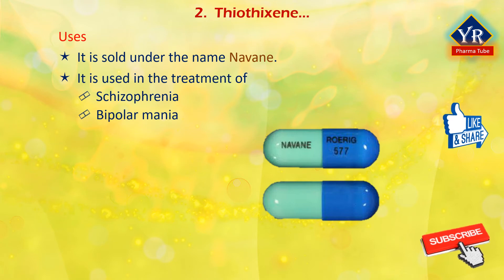Although widely used in the treatment of schizophrenia for several decades, thiothixene is rarely used today in favor of atypical antipsychotics such as risperidone.